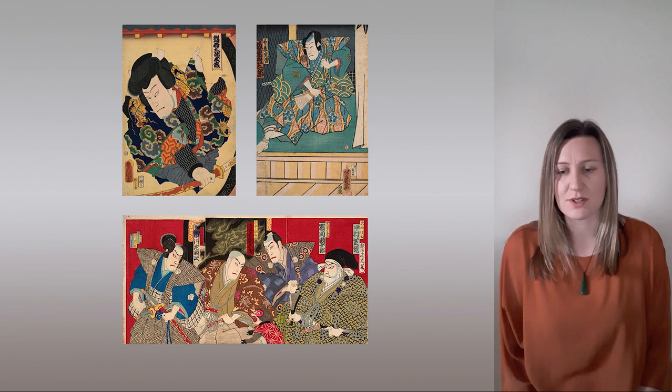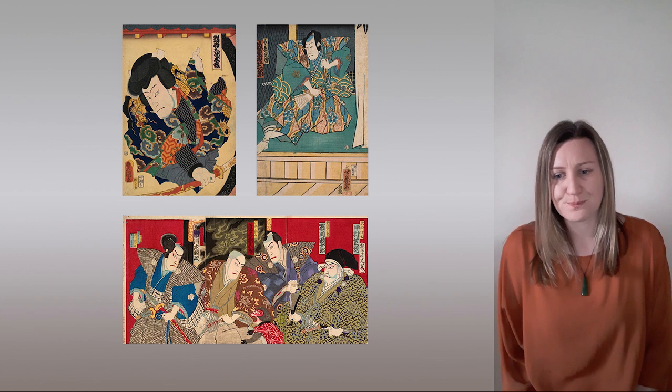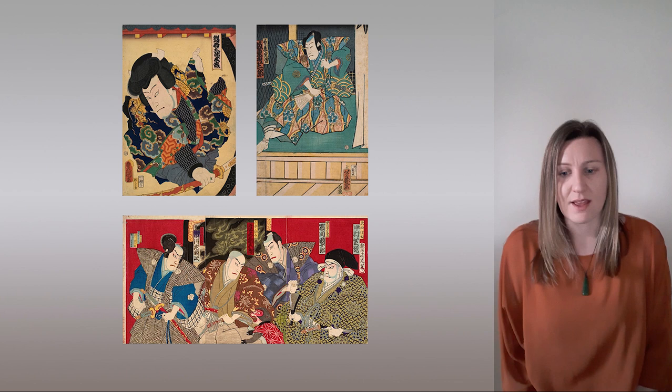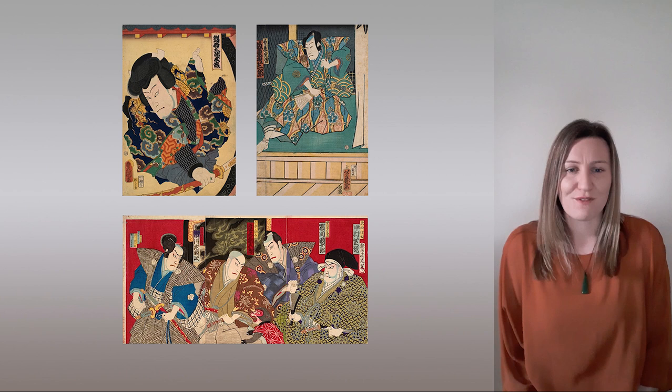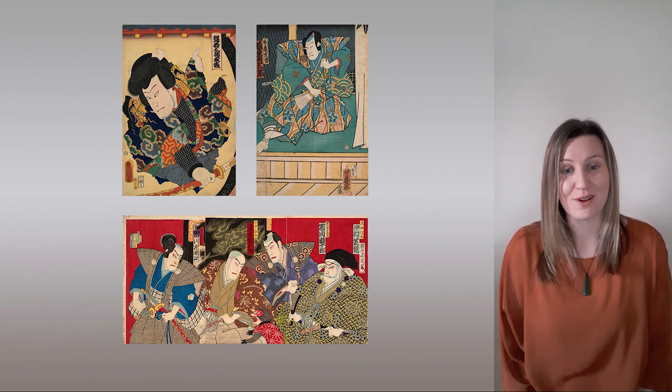It developed as an art form that directly appealed to the public. More broadly speaking, Ukiyo-e is a genre of painting, printmaking and book illustration that originated during the Edo period, 1615 to 1868. The Edo period was named after the city of Edo, that we now know as Tokyo.